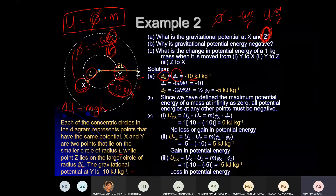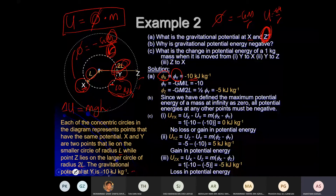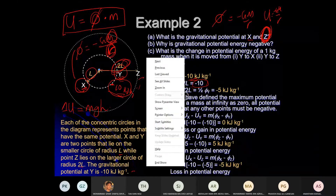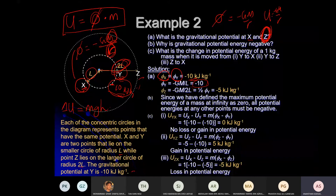Now what is the gravitational potential at Z? Z is at 2L. –GM/L = –10, so –GM/2L = half of –10 = –5 kJ/kg. Z has a gravitational potential of –5 kJ/kg.